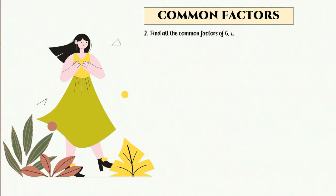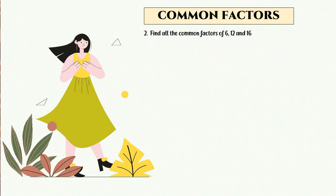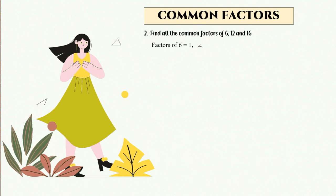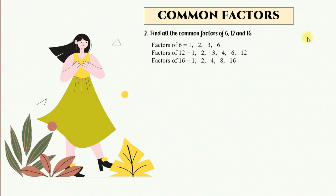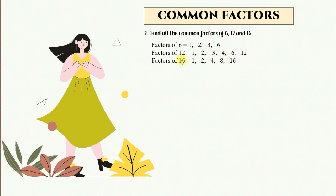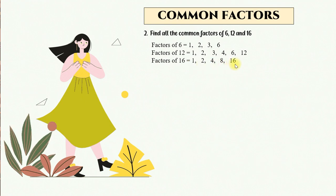Let's look at another example. Find all the common factors of 6, 12, and 16. First step: you list down the factors of 6, factors of 12, and factors of 16. Factors of 6: 1, 2, 3, 6. Factors of 12: 1, 2, 3, 4, 6, 12. Factors of 16: 1, 2, 4, 8, 16.